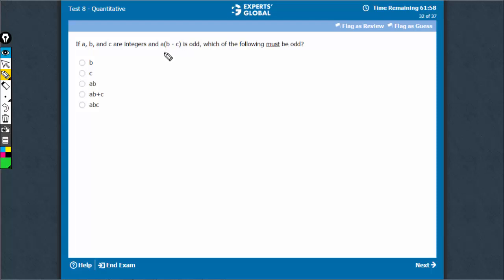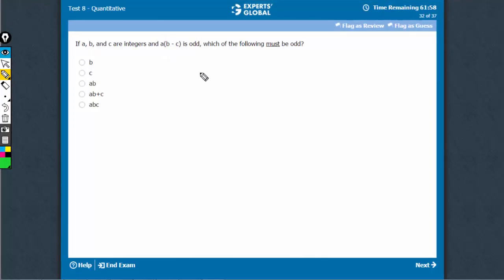If this product is odd, then A has to be odd. A product is odd only when both integers involved are odd. Odd times odd is odd.